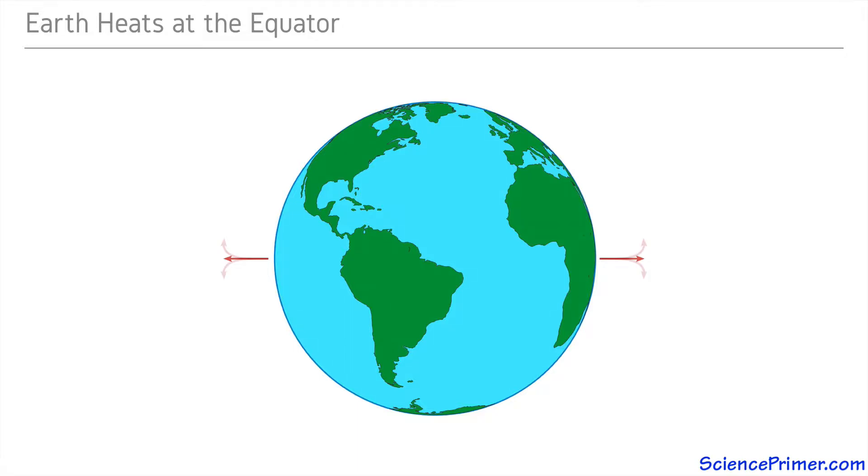Excess warming at the ground near the equator creates an area of low pressure and rising air. As this rising air reaches the top of the troposphere, it spreads north and south, cooling as it moves away from the equator.